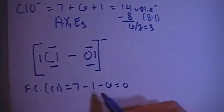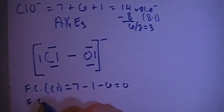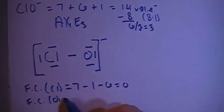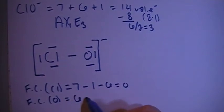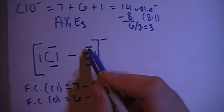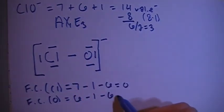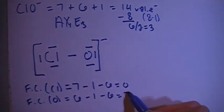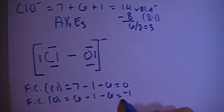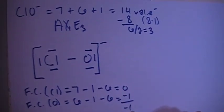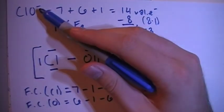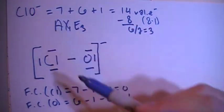The formal charge on the oxygen is going to be 6 valence electrons brought in, minus the 1 bond, minus 6 non-bonding electrons, for a formal charge of negative 1. If you add all of those up, that's a negative 1 overall formal charge, which is what we want because this is a negative 1 ion — an anion. So that's good, that's what it's supposed to be.